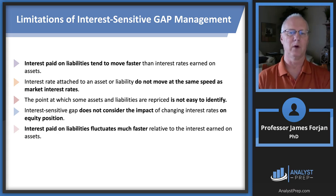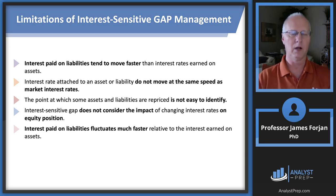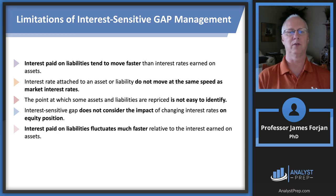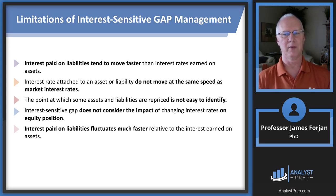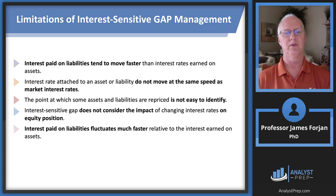Limitations of the IS gap include: interest paid on liabilities tends to move faster than interest earned on assets; the rate on an asset or liability doesn't move at the same speed as market rates; the repricing point is sometimes hard to identify; the IS gap doesn't consider the impact of changing rates on the equity position; and interest paid on liabilities fluctuates much faster.